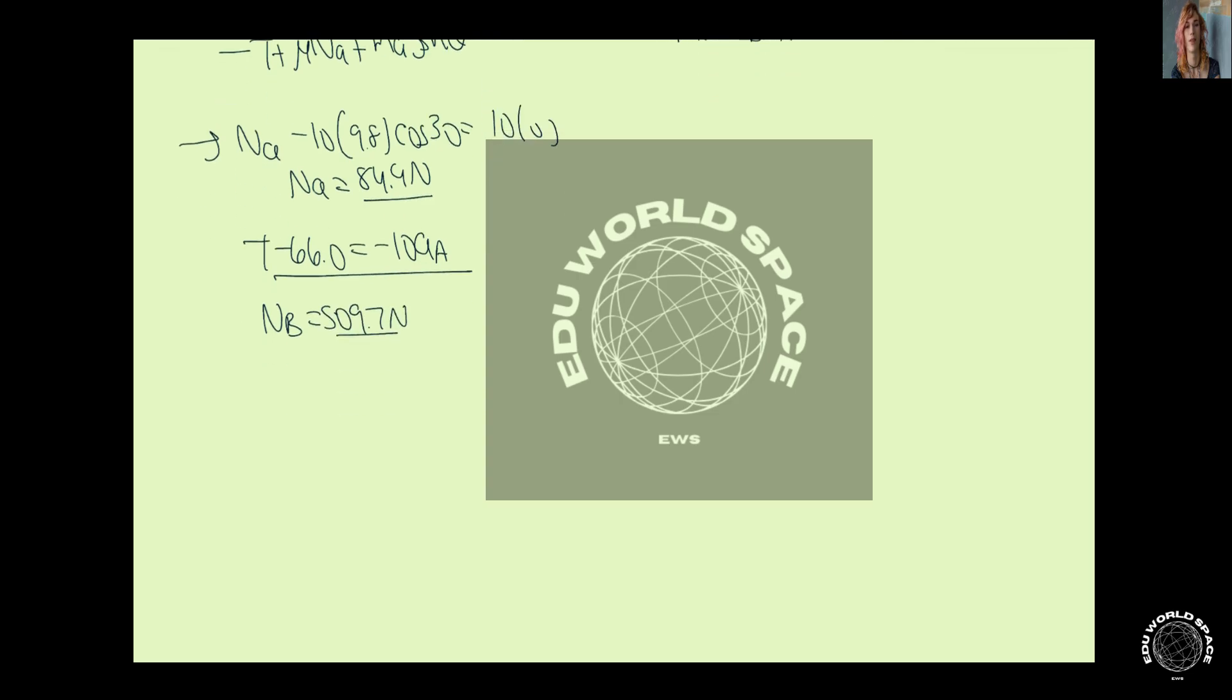From our sum of our forces in our x direction, we find 177.2 minus T is equal to negative 50 acceleration at B.